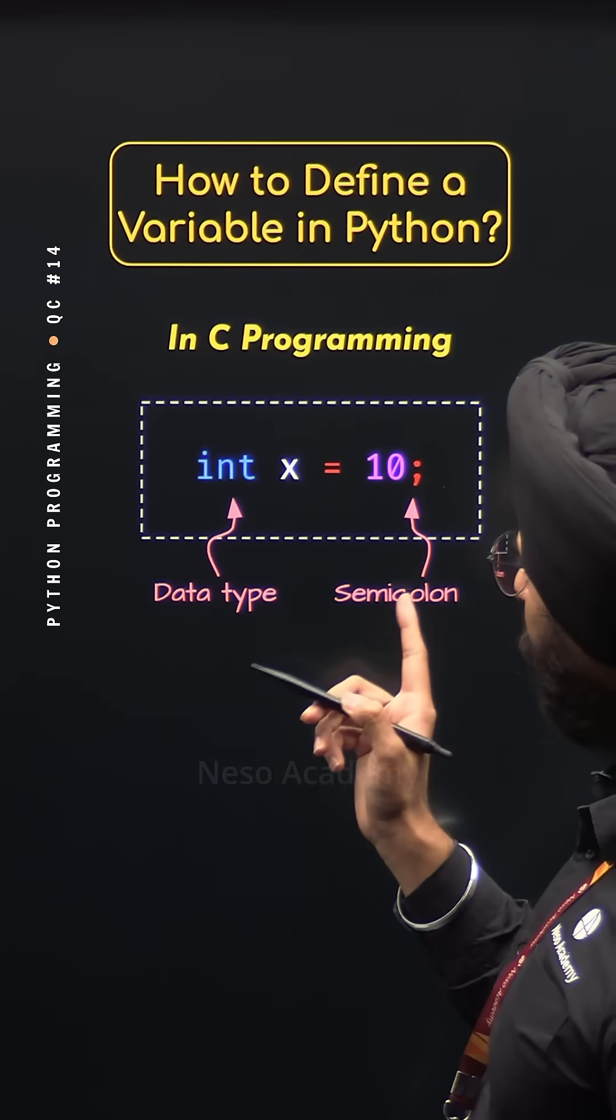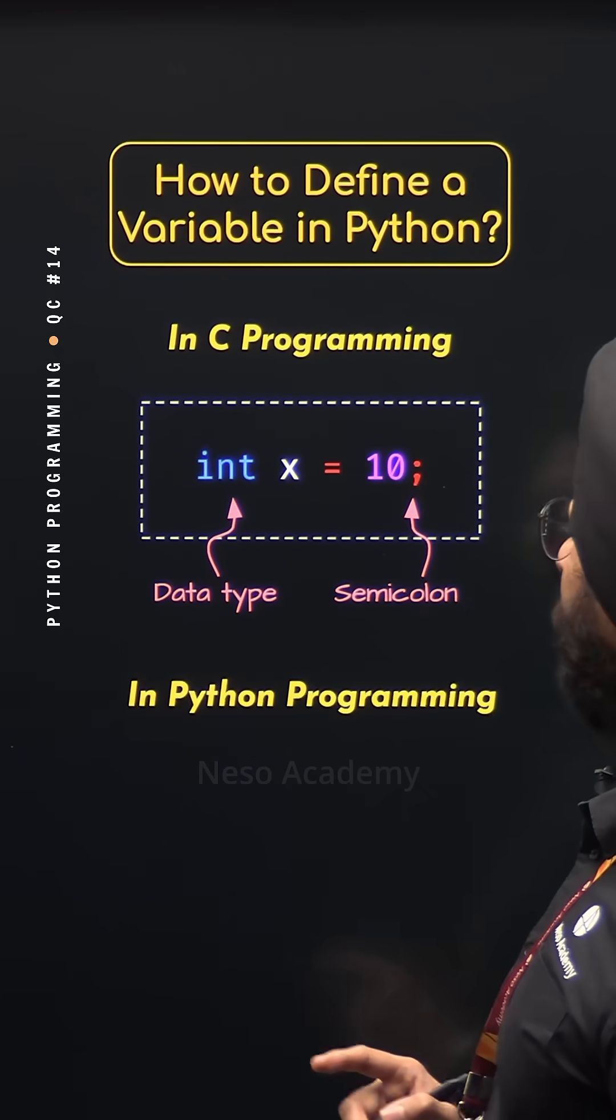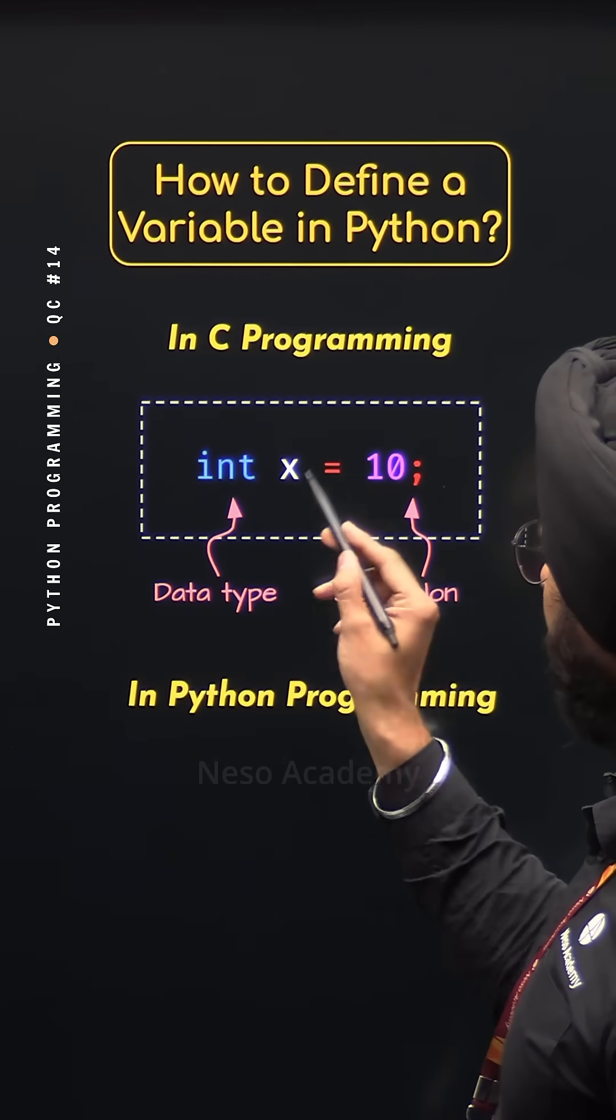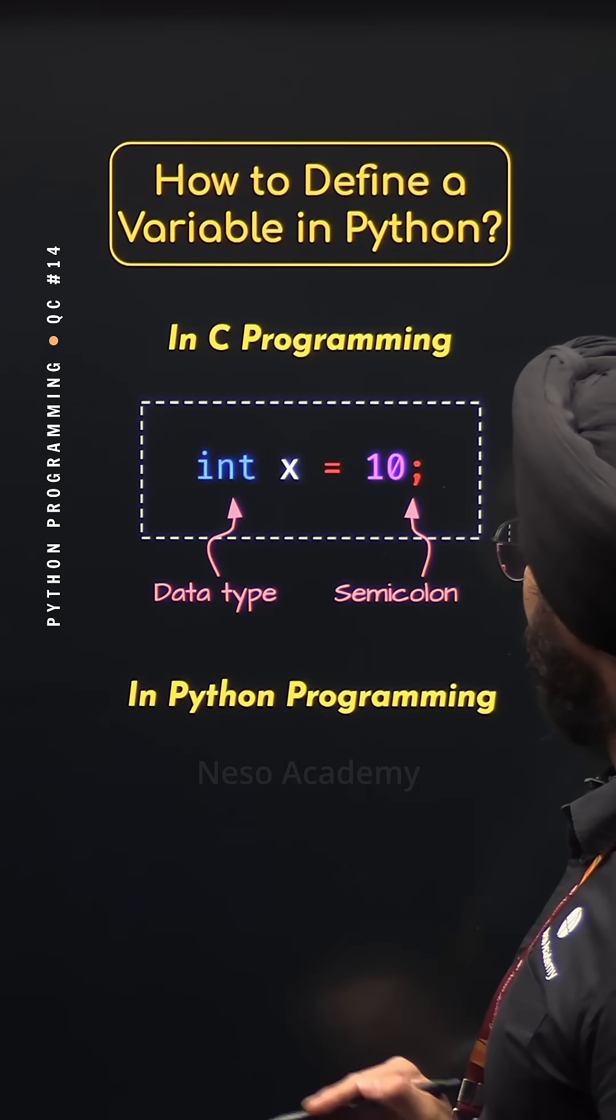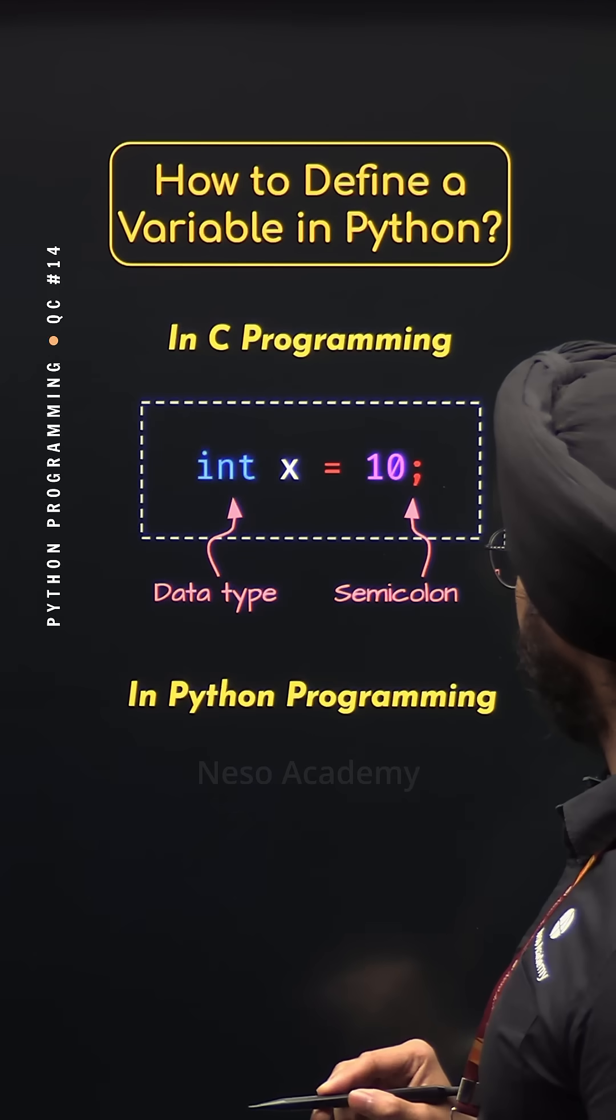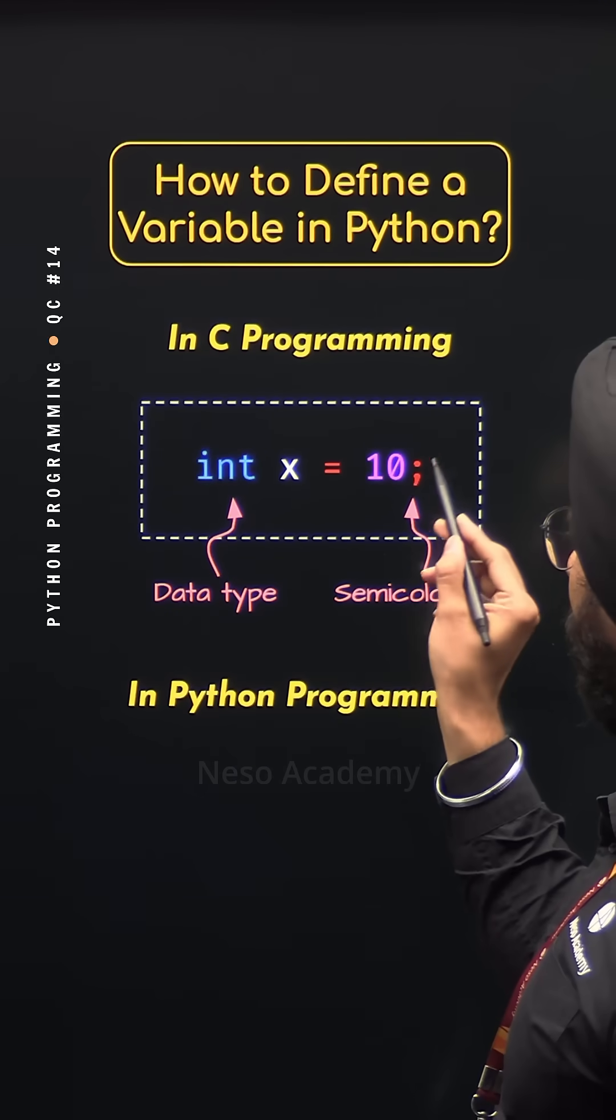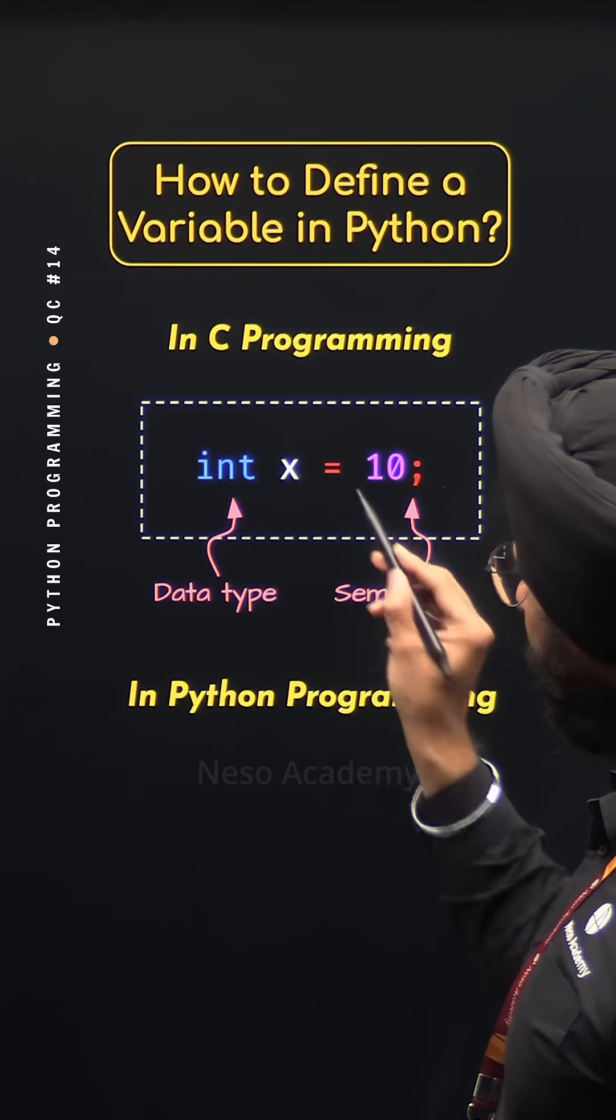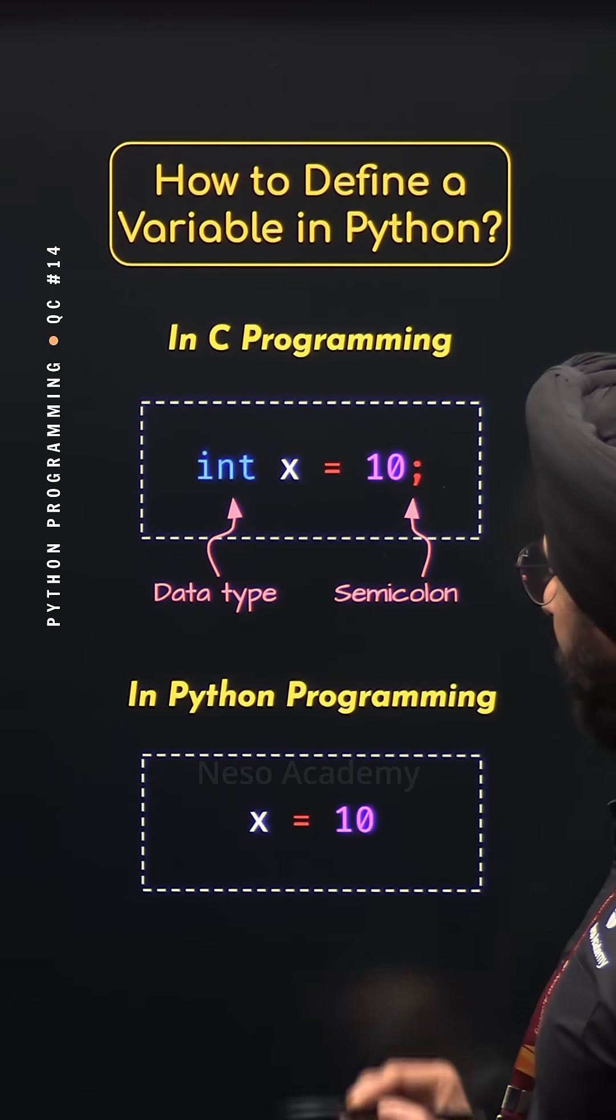But this is not what we do in Python programming. In Python programming language, we do not have to specify the data type. We can directly write the name of the variable followed by the assignment operator and then the value which we want to assign to it. So the same variable x can be defined and initialized in Python programming like this.